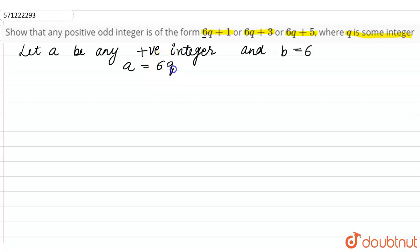where q should be greater than or equals to 0, and r should lie between 0 and b. So here b is 6, so r should lie between 0 and b. Now we have to substitute the values for r in each case.